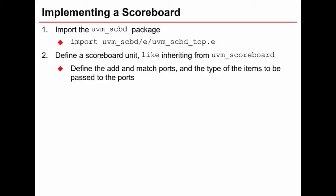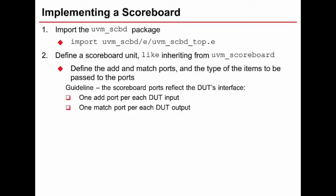We then define our own scoreboard unit which inherits from the unit called uvm_scoreboard. We then define add and match ports and the type of items which are going to be passed to those ports. In general, the scoreboard ports will reflect the DUT's interfaces, so normally we would add one port to the scoreboard for each DUT input and have one match port for each DUT output, but circumstances may dictate that we do things differently in some cases.